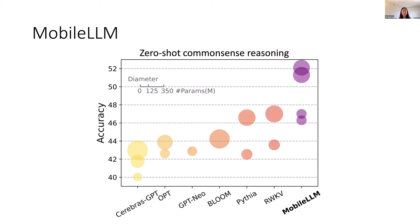Previous small LLMs were not optimized under this model size constraint, resulting in sub-optimal performance. For example, OPT and GPT-Neo were designed for 100-billion parameter models, while sub-billion models are only an intermediate by-product of larger models following the scaling law. To fully exploit the potential of sub-billion-sized models and improve their performance, we carefully redesigned the architecture for mobile LLMs to utilize weights more effectively, achieving significant accuracy boosts over previous SOTA models of similar size.